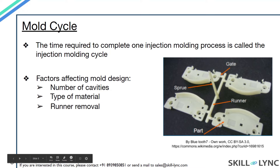The next factor is runner removal. Since runners are not part of the required component, they have to be removed, which results in an increase in mold cycle time. Runners can be removed manually or by using robots, but for lower mold cycle times, use of robots is preferred. There are also many types of runners and gates available, and the type selected will also affect the mold cycle time.